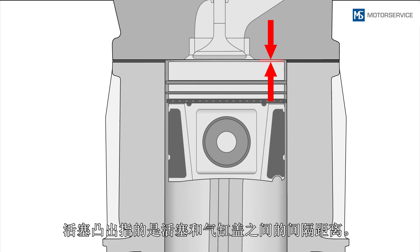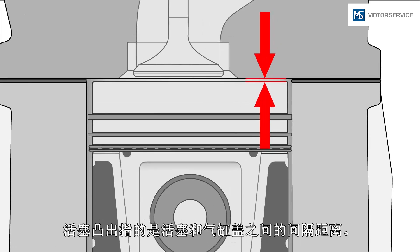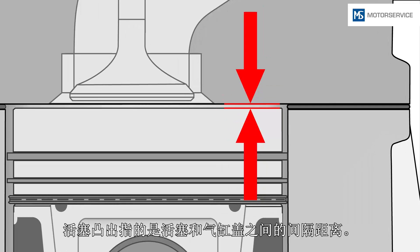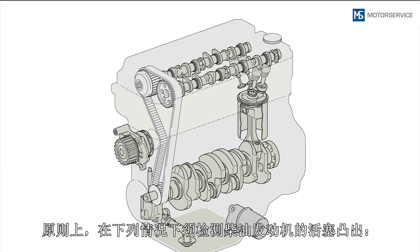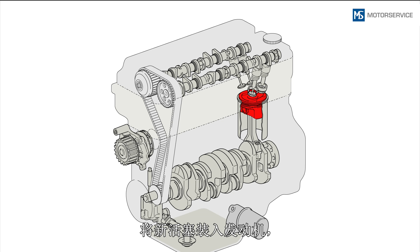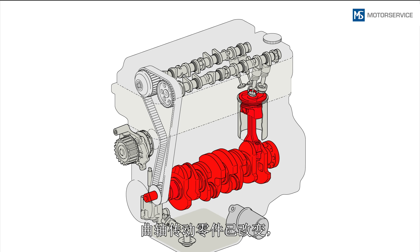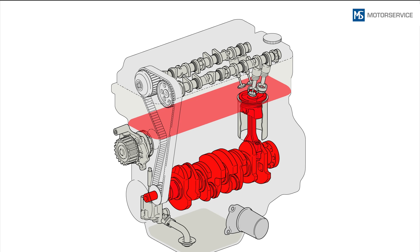The piston protrusion defines the distance between the piston and cylinder head in diesel engines. The piston protrusion must always be checked if new pistons have been installed in the engine, or if parts on the crank mechanism have been modified.